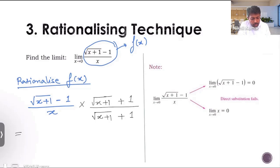If you look at the numerator now, let's call this a. This entire thing is a. A minus 1 into a plus 1. Do you recall any identity? A minus b multiplied by a plus b, that's a square minus b square. So that means x plus 1, this is our a, this minus b square which is 1 square. And in the denominator, we are going to have x into root x plus 1 plus 1.